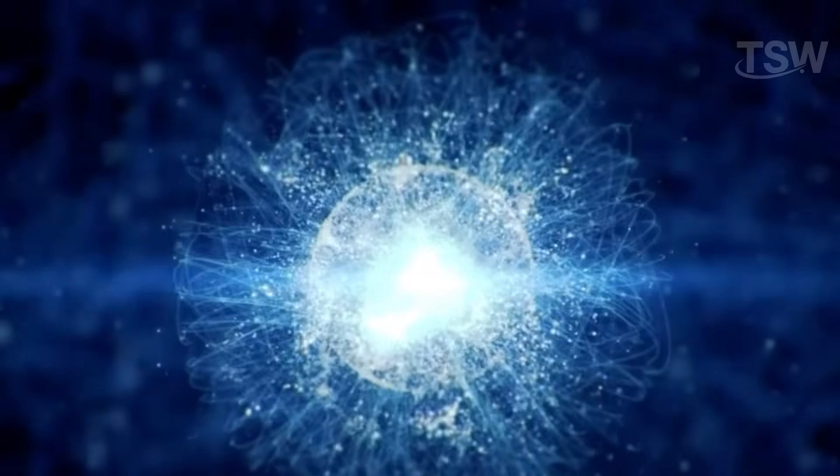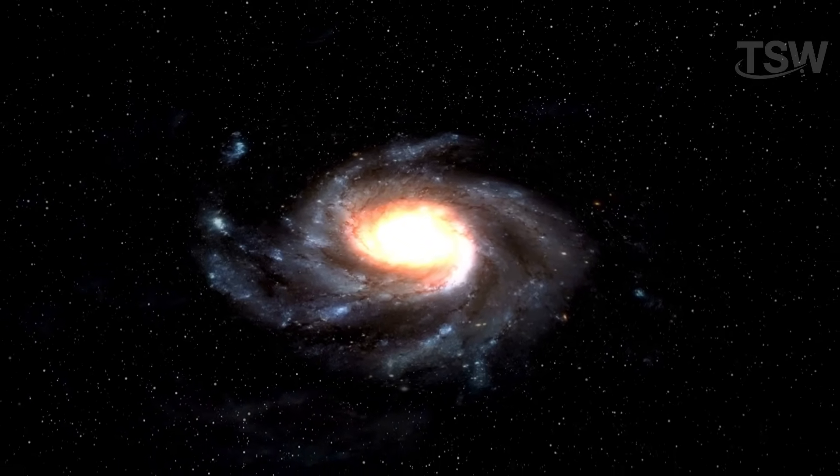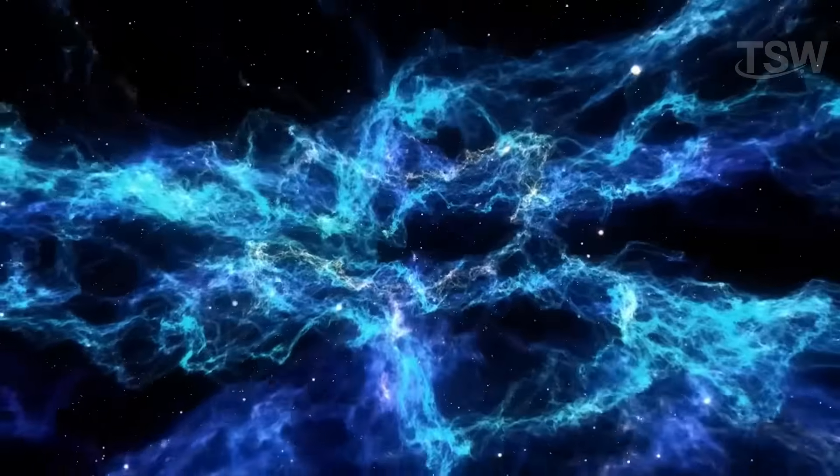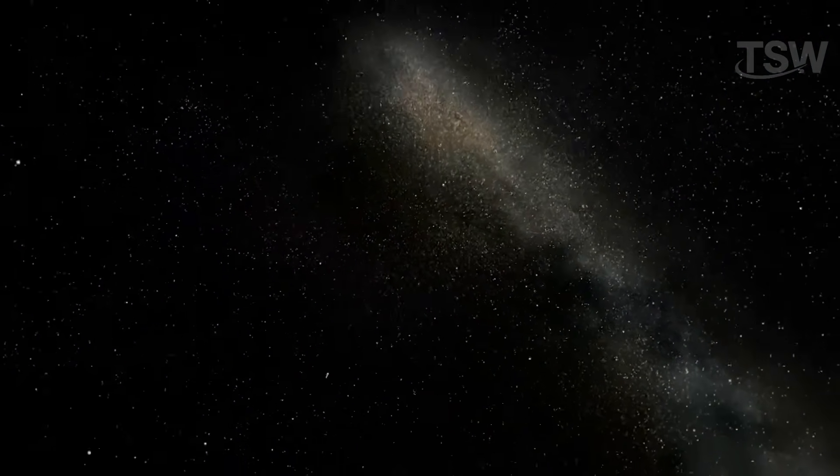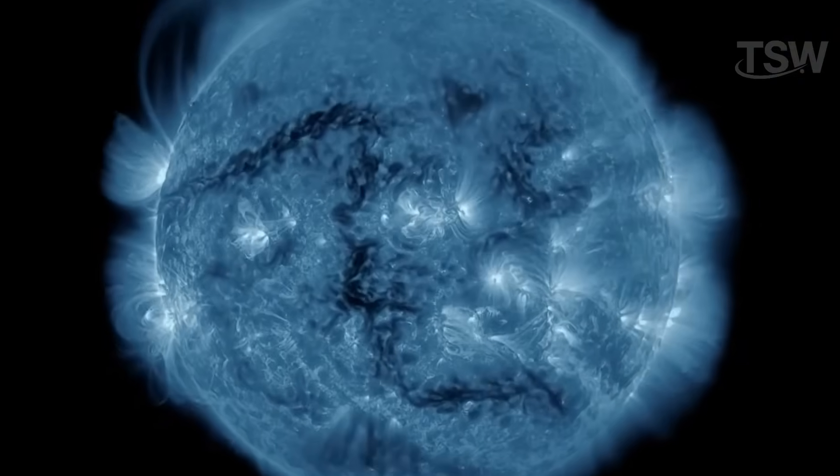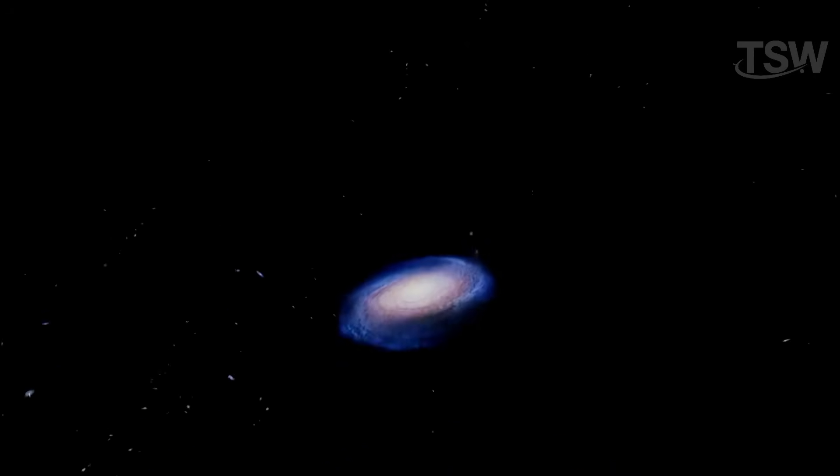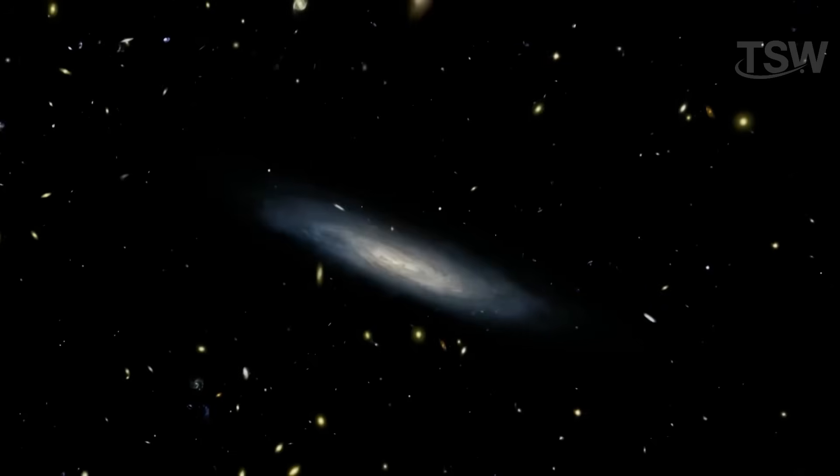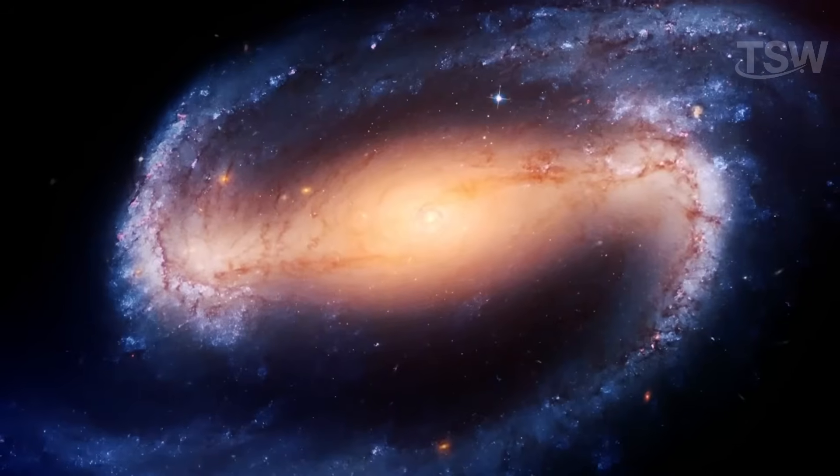As we push beyond the dark matter halo, we begin to leave the Milky Way's boundaries for good. But that doesn't mean we've entered total emptiness. Intergalactic space still holds surprises, and some are much closer than we imagine. Every now and then, we might come across rogue stars wandering through space, like lone wolves that were expelled from or drifted away from their original galaxy. These are fascinating objects, but very hard to track. The vastness between galaxies is like a silent ocean, where these stars sail alone.